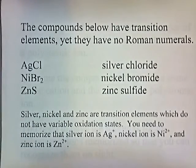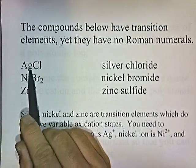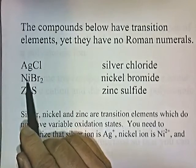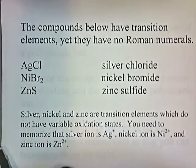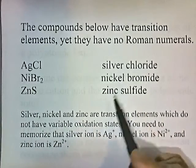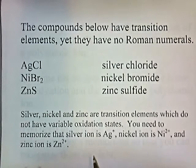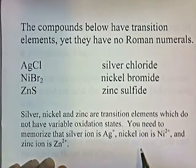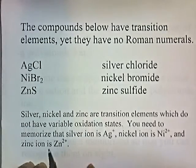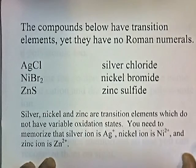Some compounds with transition elements have no Roman numerals in their names. Silver, nickel, and zinc are transition elements that do not have variable oxidation states. You need to memorize that silver is always Ag+, nickel is always Ni2+, and zinc ion is always Zn2+.